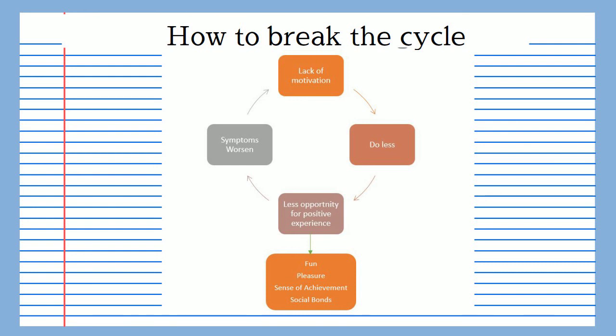Remember we should be supporting patients, not lecturing them. As an example, I might ask: on this diagram you can see that a lack of motivation and doing less are linked together — why do you think this is? By the end of the discussion the patient needs to understand that it is doing less which is maintaining the vicious cycle — in other words, the reduction in activity is keeping their depression going, because doing less prevents access to positive experiences that normally maintain and boost our mood.